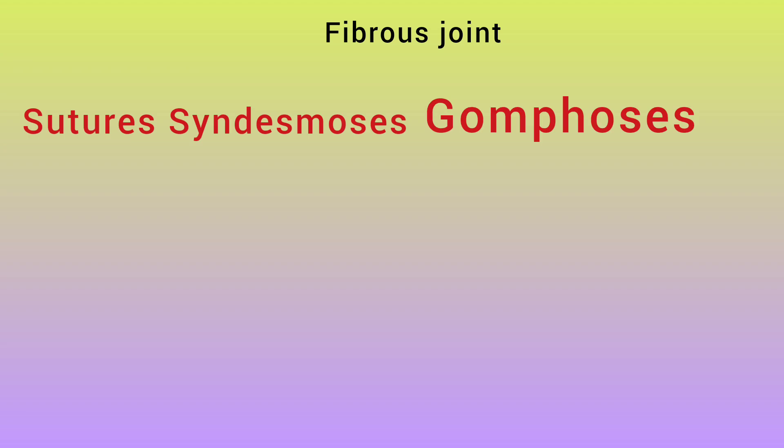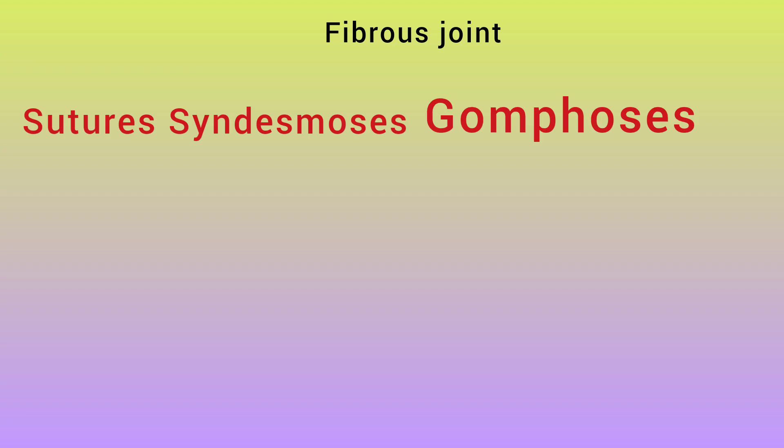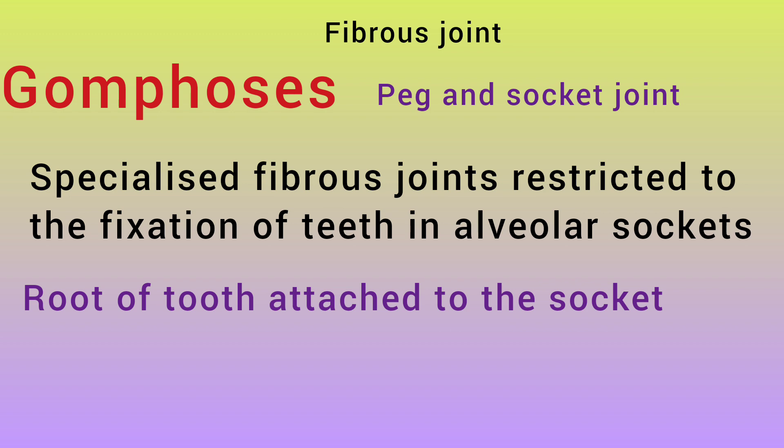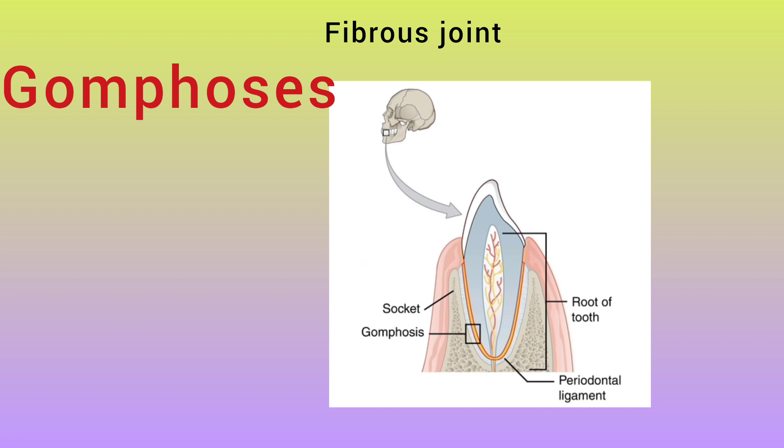Now we will look at gomphosis. Gomphosis is a peg-and-socket joint. These are specialized fibrous joints restricted to the fixation of teeth in alveolar sockets — that is why our tooth is fixed in the alveolar sockets of the maxilla and mandible. The root of the tooth is attached to the socket via the periodontal ligament.